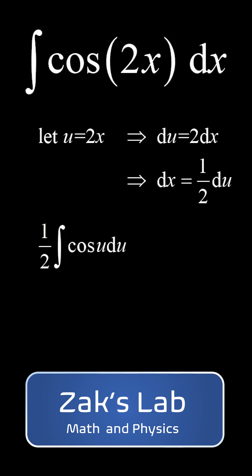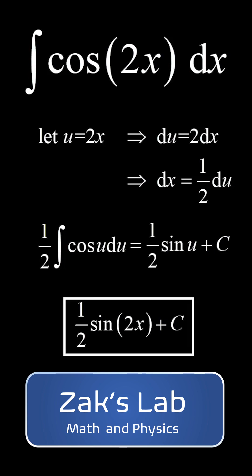We make all the substitutions and get 1 half integral of cosine u du, which quickly integrates to 1 half sine u plus c, and we've replaced the u with 2x to get the final answer, 1 half sine 2x plus c.